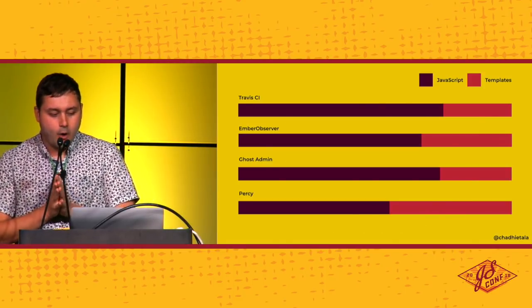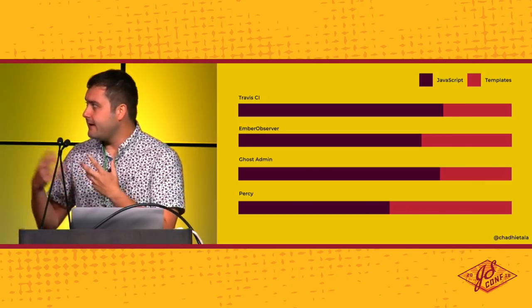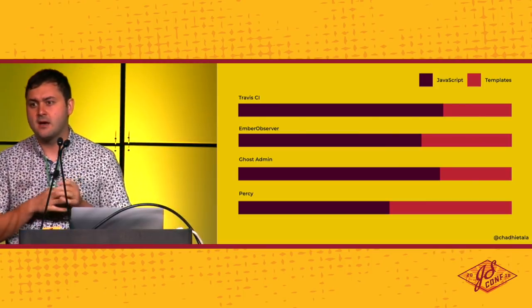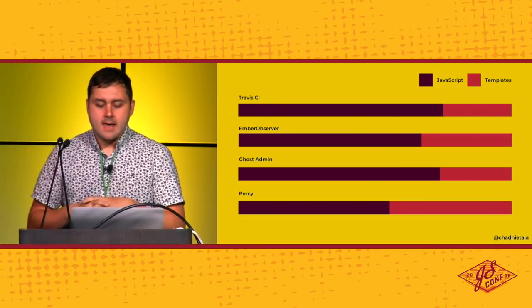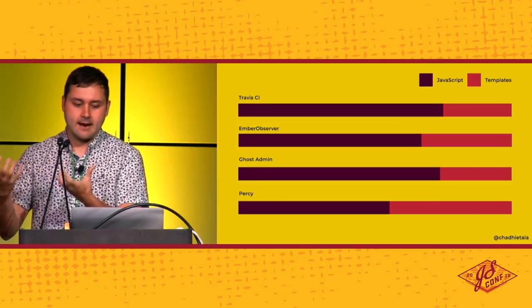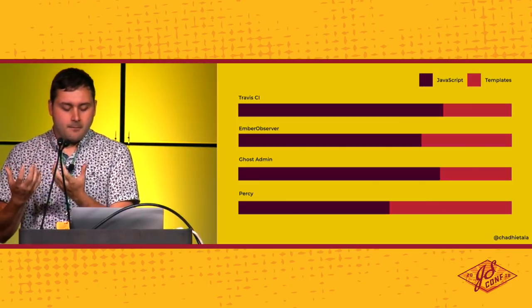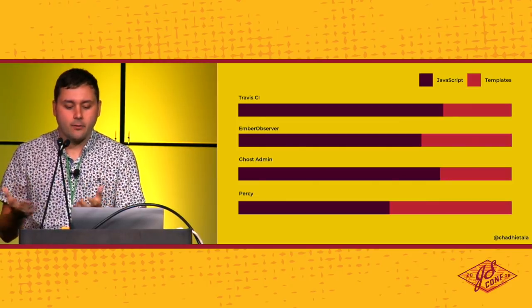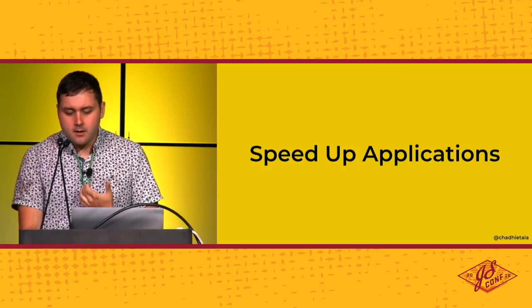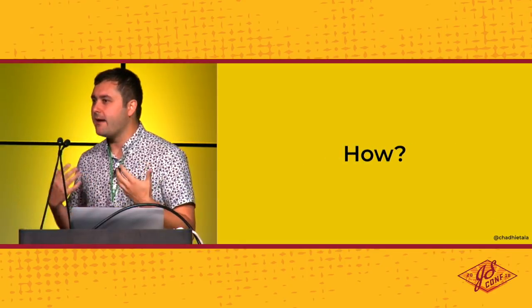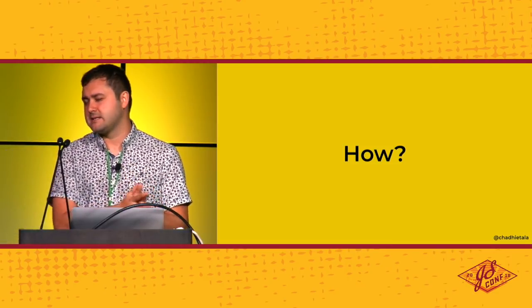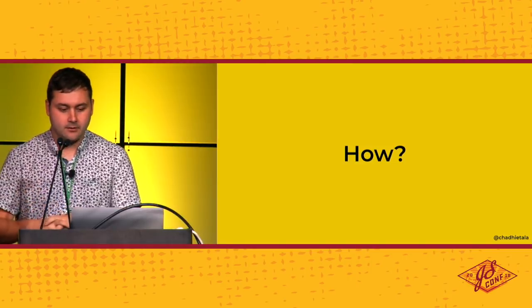Looking at open source Ember applications and internal applications, we find that anywhere from 25 to 40% of these applications are built up of the templating layer. If we can take those templates and compile them into something that isn't JavaScript — avoiding that inherent parse and compile cost — then we can actually speed up applications. We're going to walk through a quick example of how both the compilation part works and how we actually execute that code at runtime.